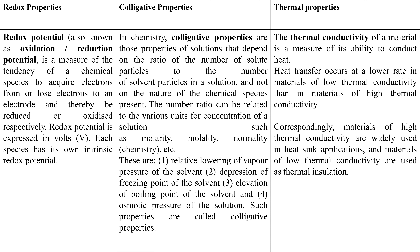Thermal Properties measure the ability of a material to conduct heat. Heat transfer occurs at a lower rate in materials with low thermal conductivity. High thermal conductivity means heat transfers well, while low thermal conductivity acts as thermal insulation, so that there is minimal heat transfer.